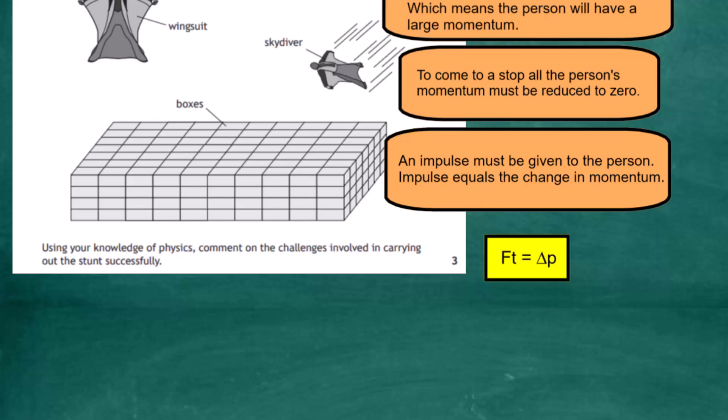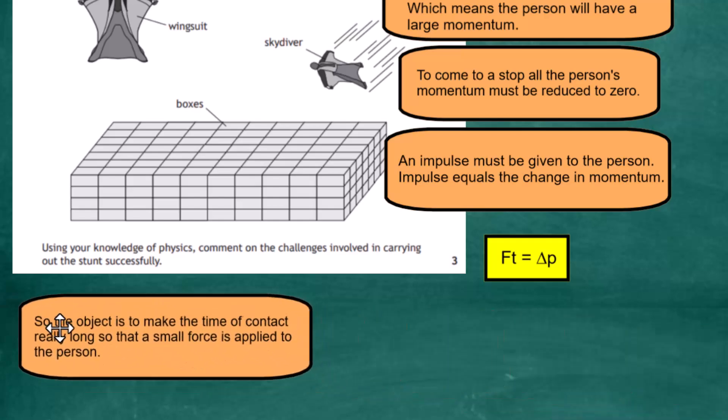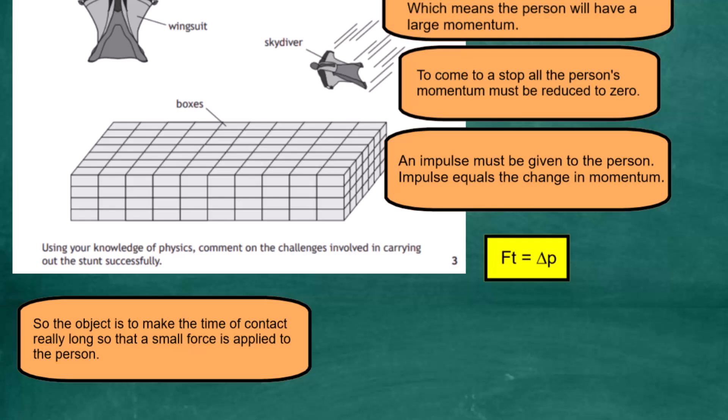We've got two options here. One of the options is to make the time of contact really long so a small force is applied to the person. Remember, we can't change the momentum part of this; we only can change either the force and time. So we can have a large force over a small time—big number times a small number—and that's not really what we're looking for.